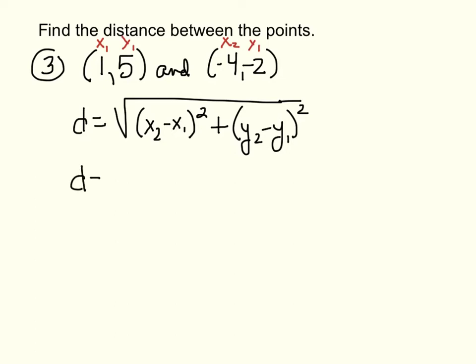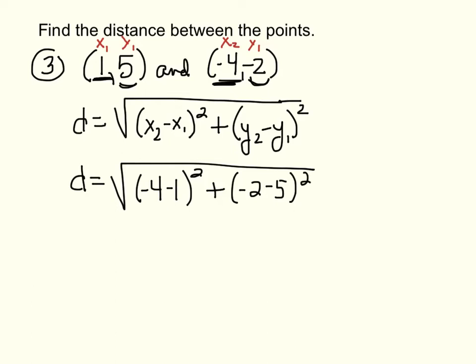D equals, subtract your x's, negative 4 minus 1, negative 4 minus 1 squared, plus, subtract your y's, negative 2 minus 5 squared. Negative 4 minus 1 is negative 5 squared. Negative 2 minus 5 is negative 7 squared, and now this is just basic math.